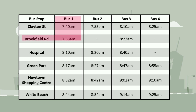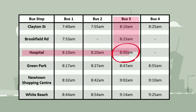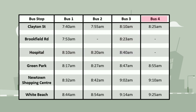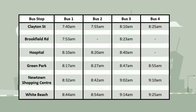It then arrives at Brookfield Road at 7.53 a.m. We can see that bus 3 will arrive at the hospital at 8.40 a.m. Bus 4 reaches White Beach at 9.25 a.m. In this way we can see the time at which buses will arrive at each of the stops.